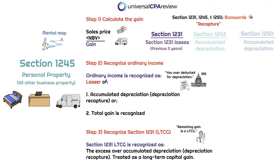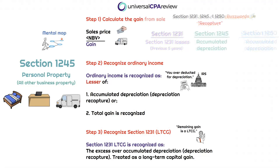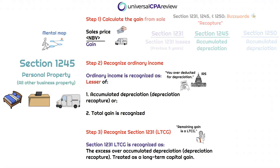Our key word for this module is recapture. When we thought of section 1231, we were thinking about recapturing ordinary losses from section 1231 losses within the previous five years — the five-year look-back rule. Now with section 1245, we're still thinking about recapturing ordinary income, but specifically by focusing on accumulated depreciation for the personal property.